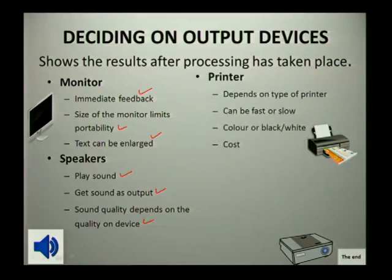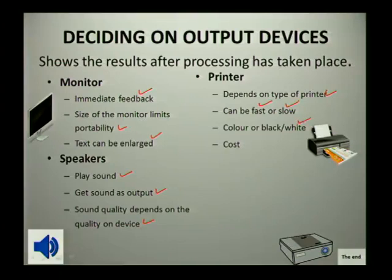Another output device is a printer. You depend on the type of printer you want. Each printer differs in terms of whether it is fast or slow, and they differ in terms of functionality. You can choose whether you want to print in black and white.